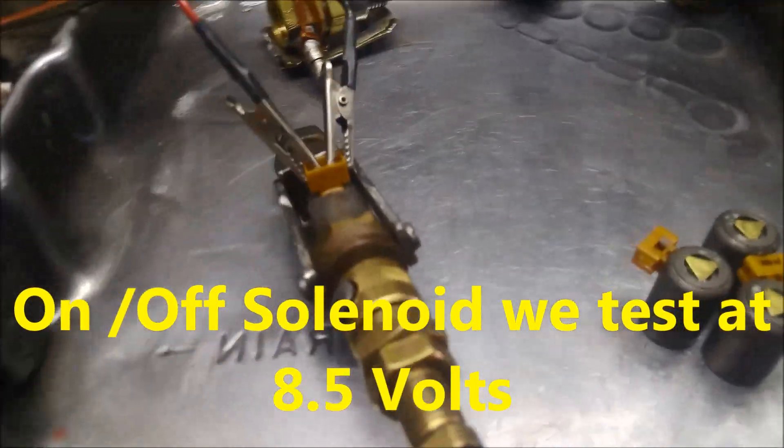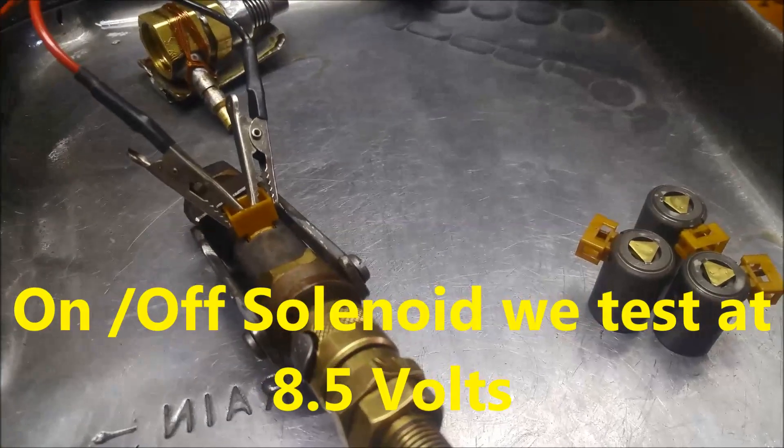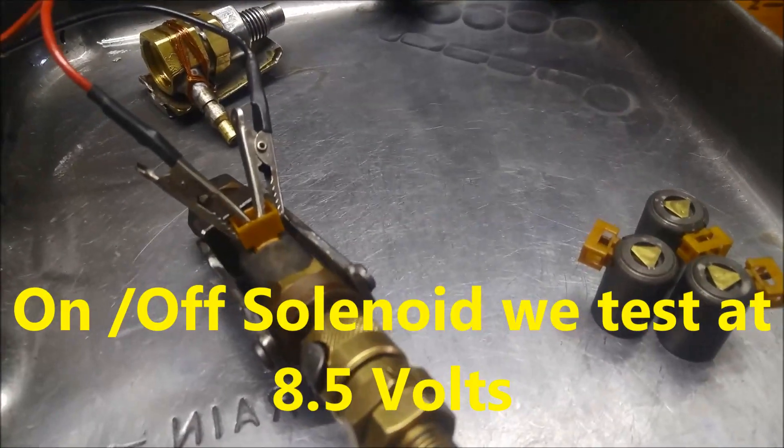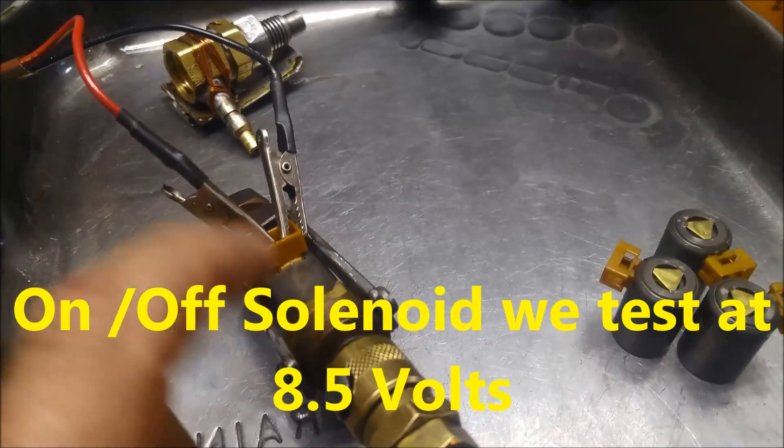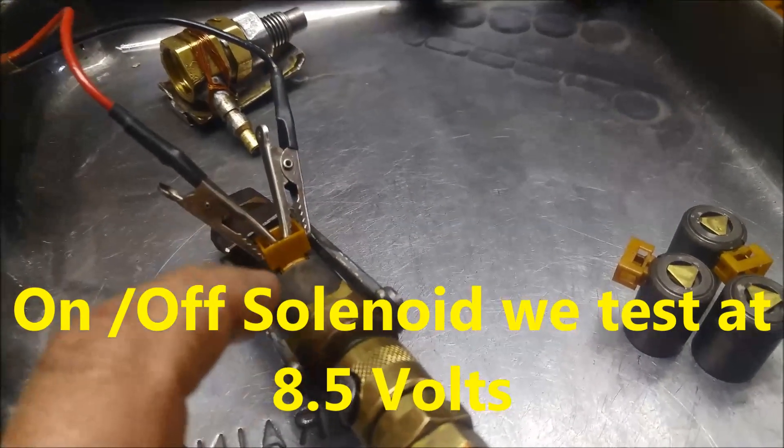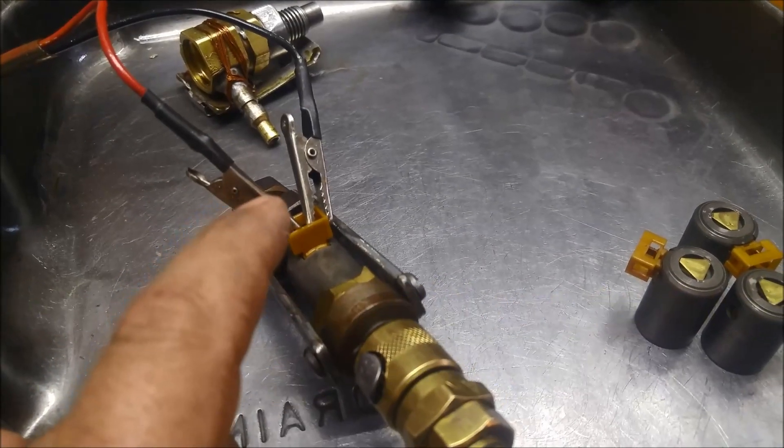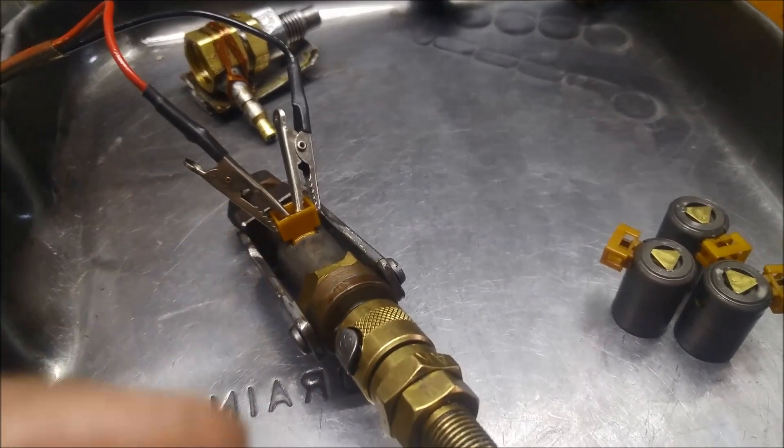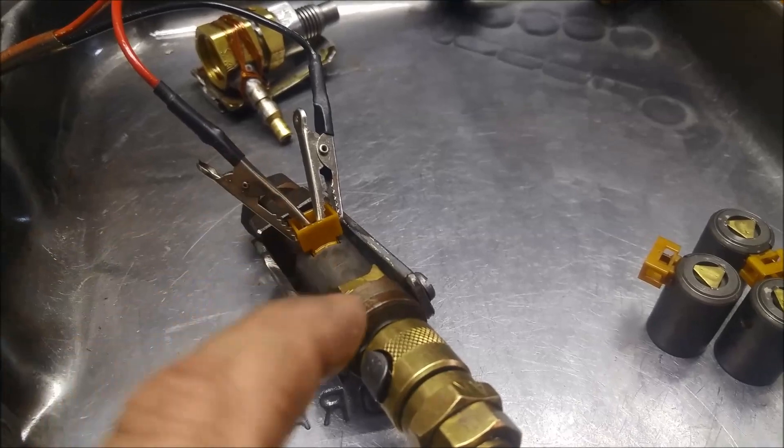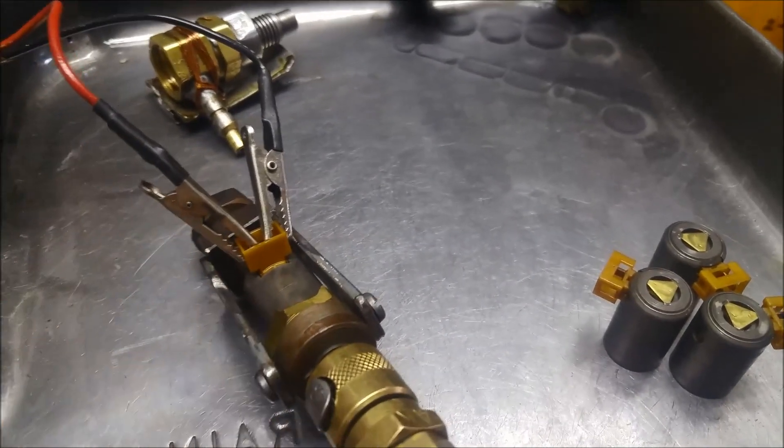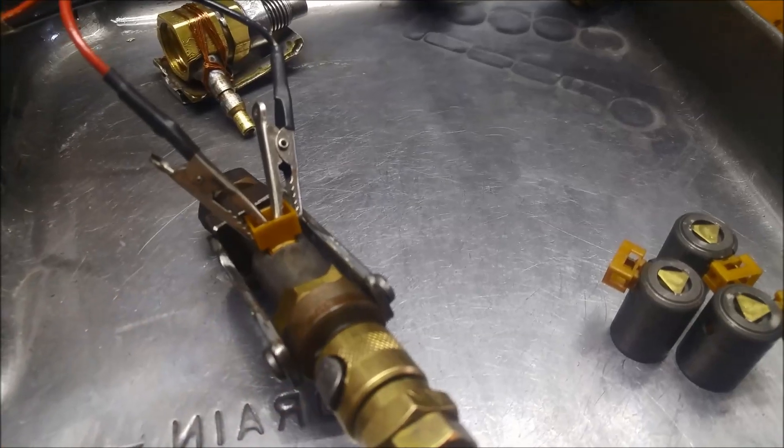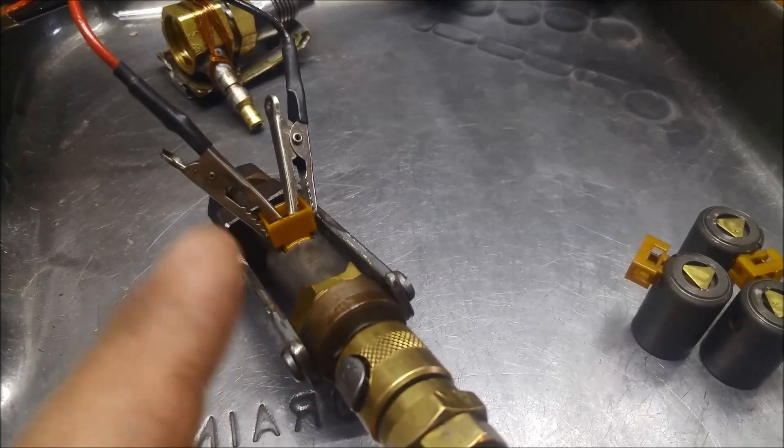Anyway it shows how you can demagnetize and clean solenoids out more efficiently. But it's still important to test them, air pressure test them. If they're PWM or linear solenoids you need to test them with amperage not with voltage. These are on-off solenoids so you can just test them with 12 volts. I like to test them at about 8.5 volts.